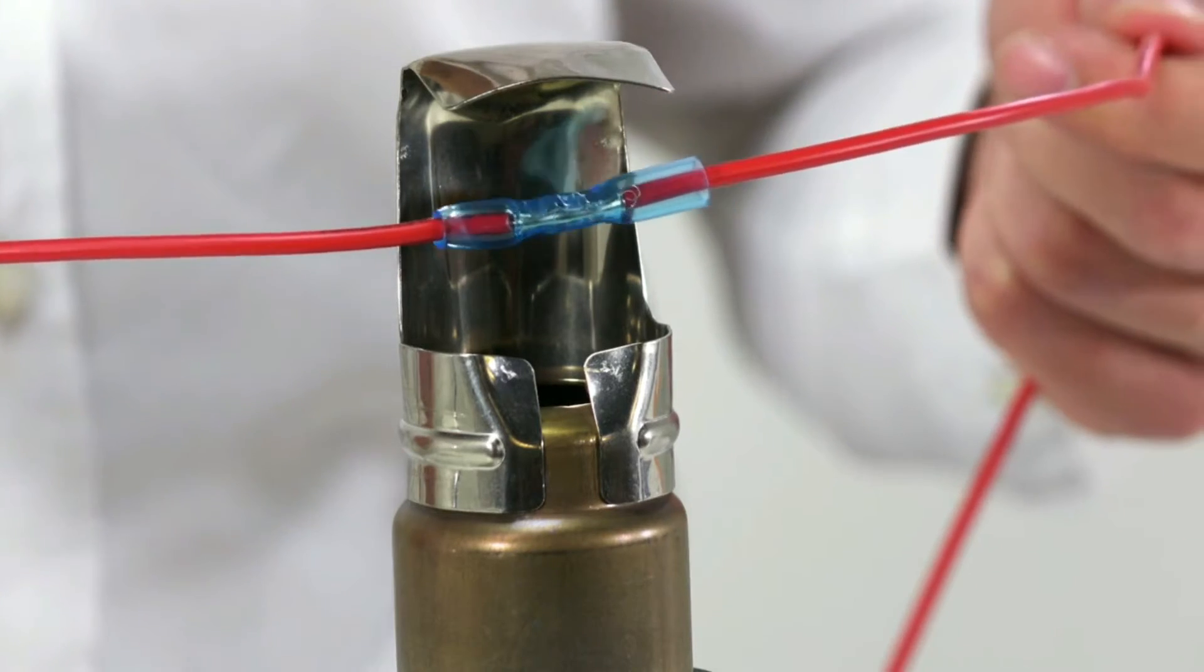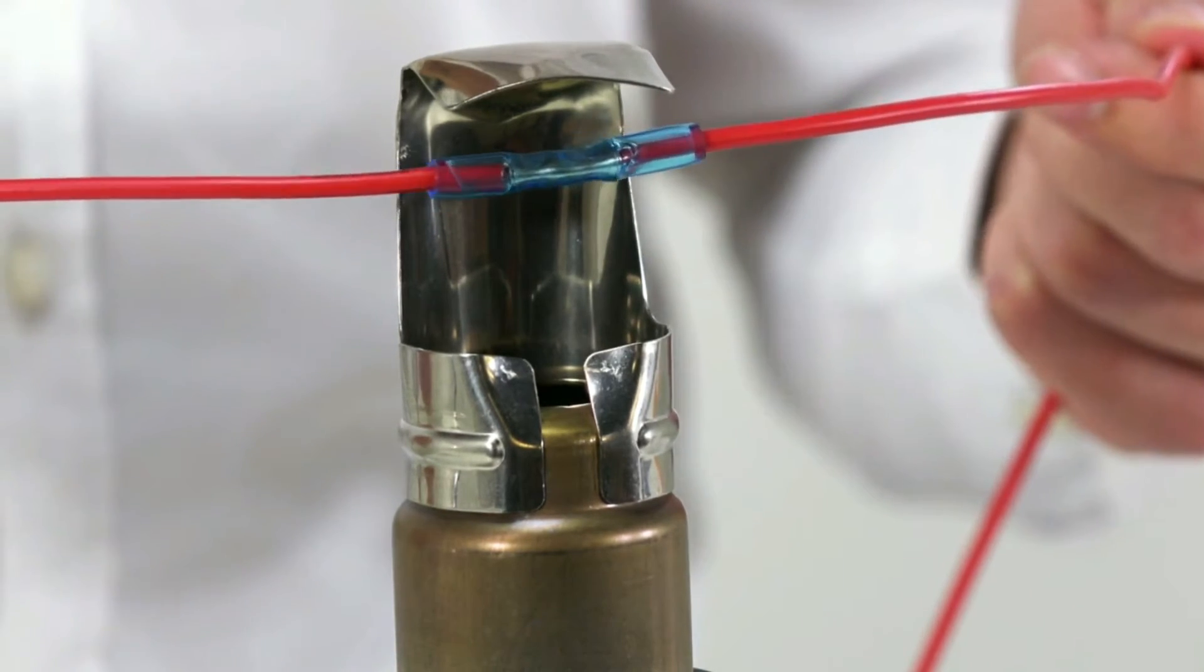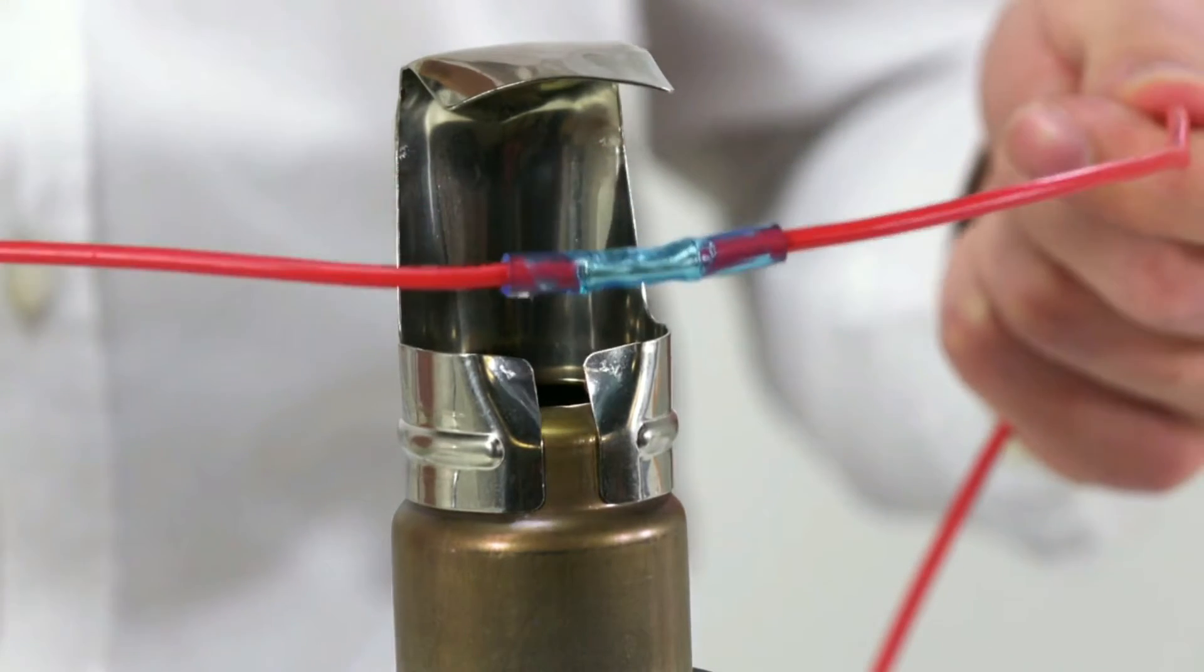Once the heat is applied on this crimp connector, you can see that it will start shrinking, thereby creating a watertight connection.